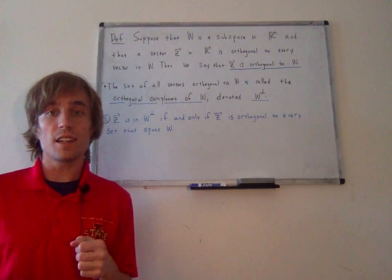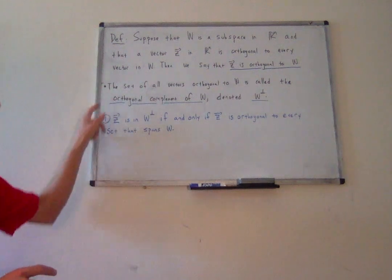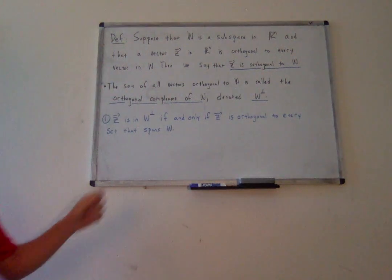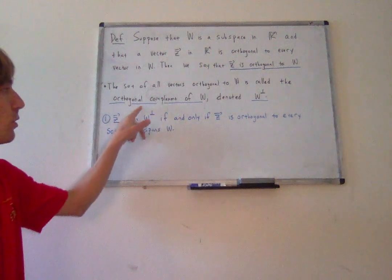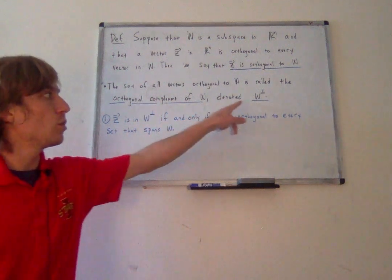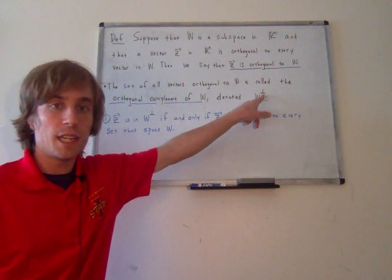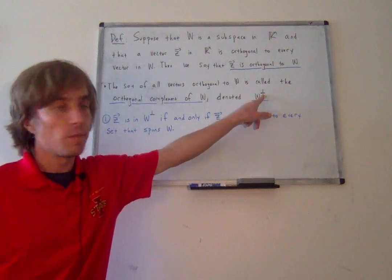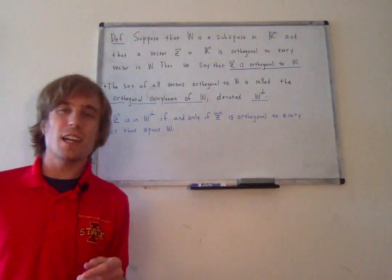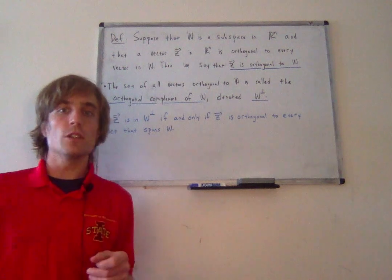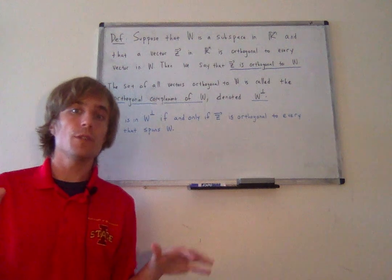Now we can take the set of all vectors that are orthogonal to every vector in a set. The set of all vectors orthogonal to w, where w is a subspace, is called the orthogonal complement of w, denoted w perp. This upside-down t symbol is called perp — you can see it kind of represents two perpendicular lines. So the orthogonal complement of w.